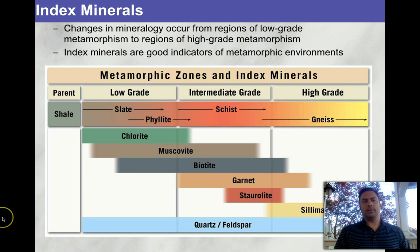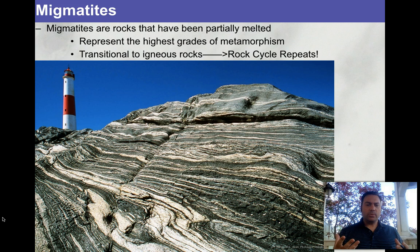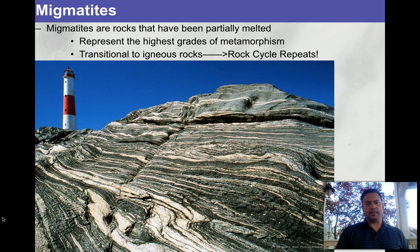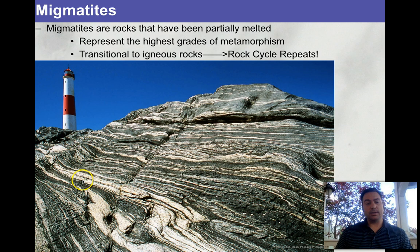If we heat things up too much or don't have enough pressure, we wind up with a rock that is partially melted — this is migmatite. The white felsic zones have lower melting temperatures and were liquid at some point, whereas the black mafic zones were solid. This is the transition to igneous rocks — and we see a repeat of the rock cycle.